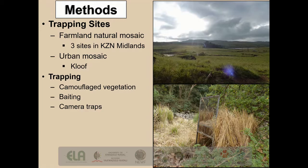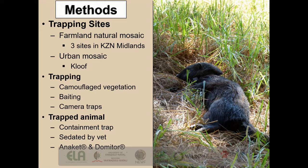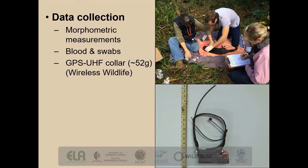The traps were checked three times a day: first thing in the morning, mid-afternoon, and in the evening. A veterinarian was always on call to assist with this project. Once an individual was trapped, it was swiftly shifted into a containment trap where it was later sedated by a vet using a combination of Anaket and Domitor. Once the individual was suitably sedated, we took a number of important morphometric measurements, as well as bloods, and anal and oral swabs for future analysis. If the individual weighed a suitable mass, we attached a GPS UHF collar.